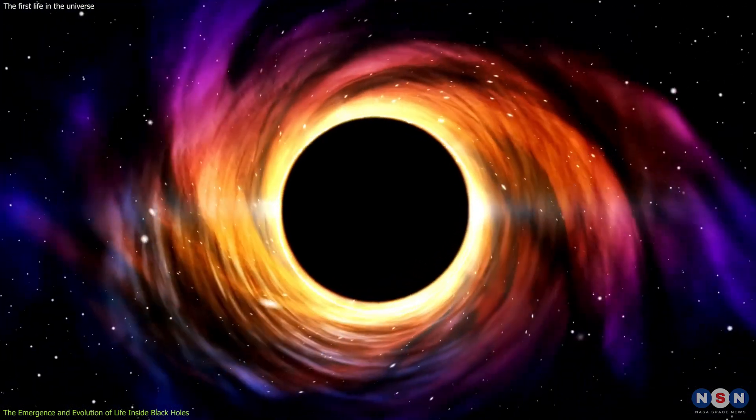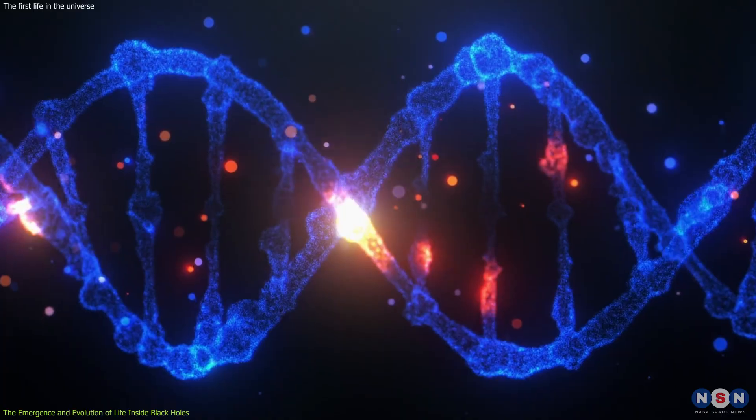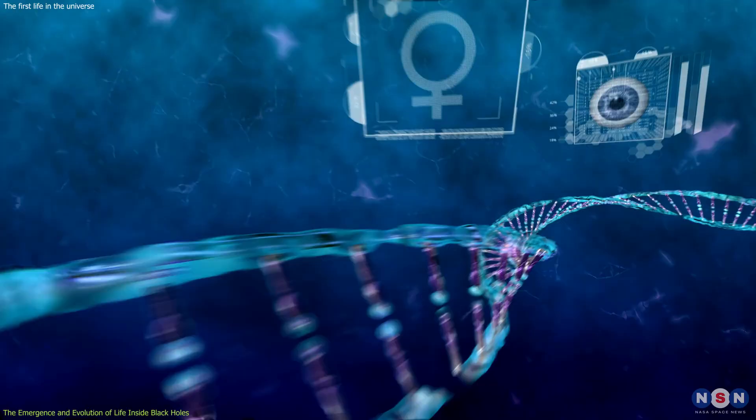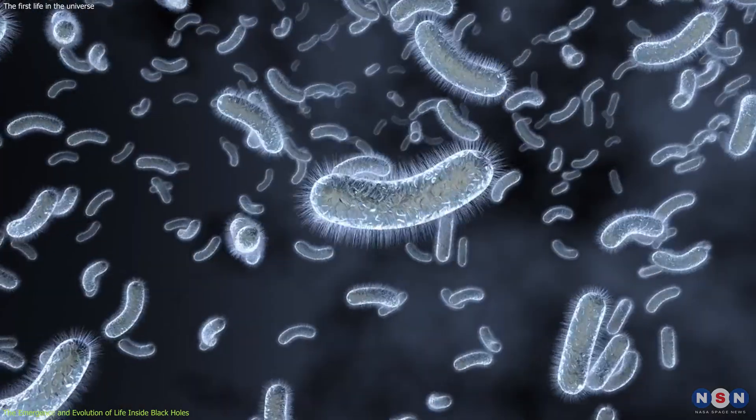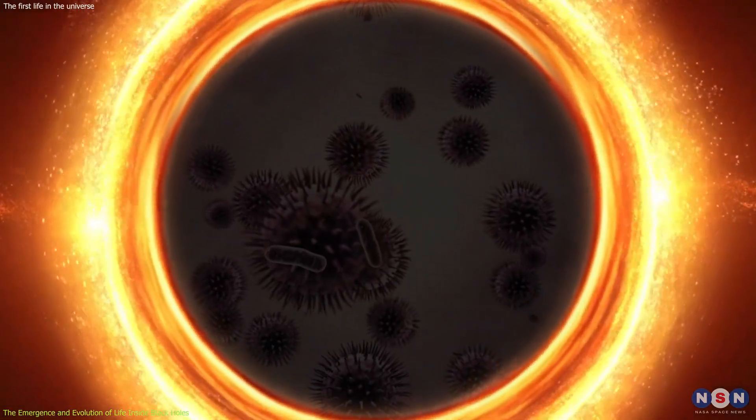They assumed that some of the matter that falls into the black hole could form complex molecules, such as DNA or RNA, that could store and transmit information. These molecules could then evolve into simple life forms, such as bacteria or viruses, that could survive and reproduce inside the black hole.